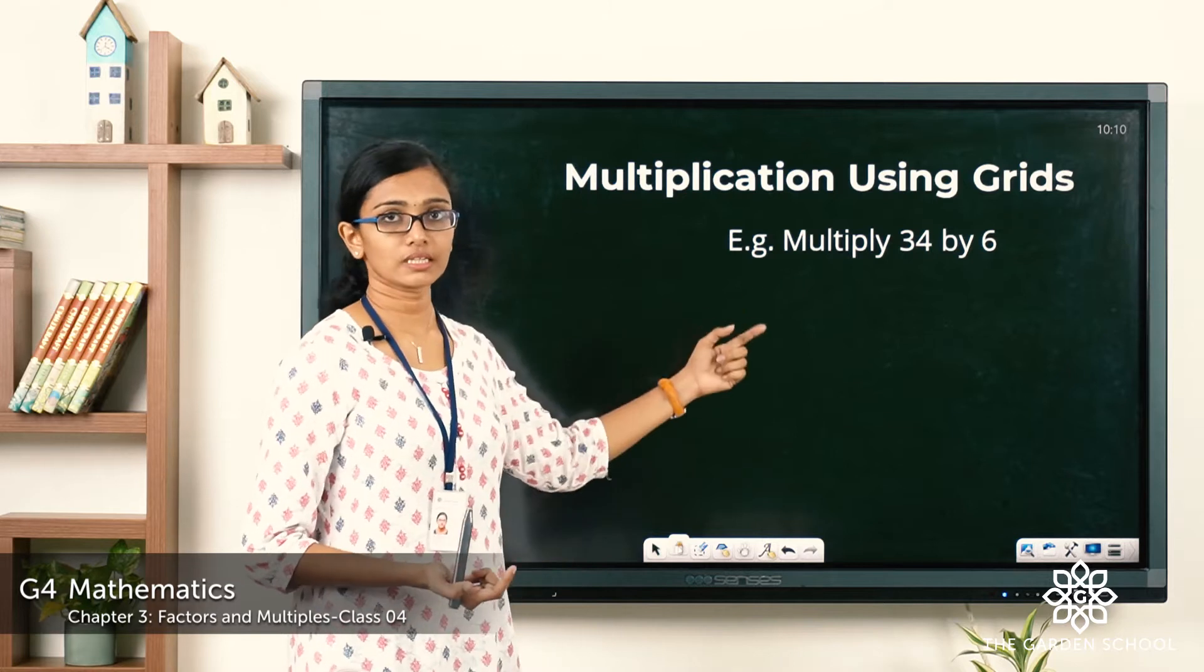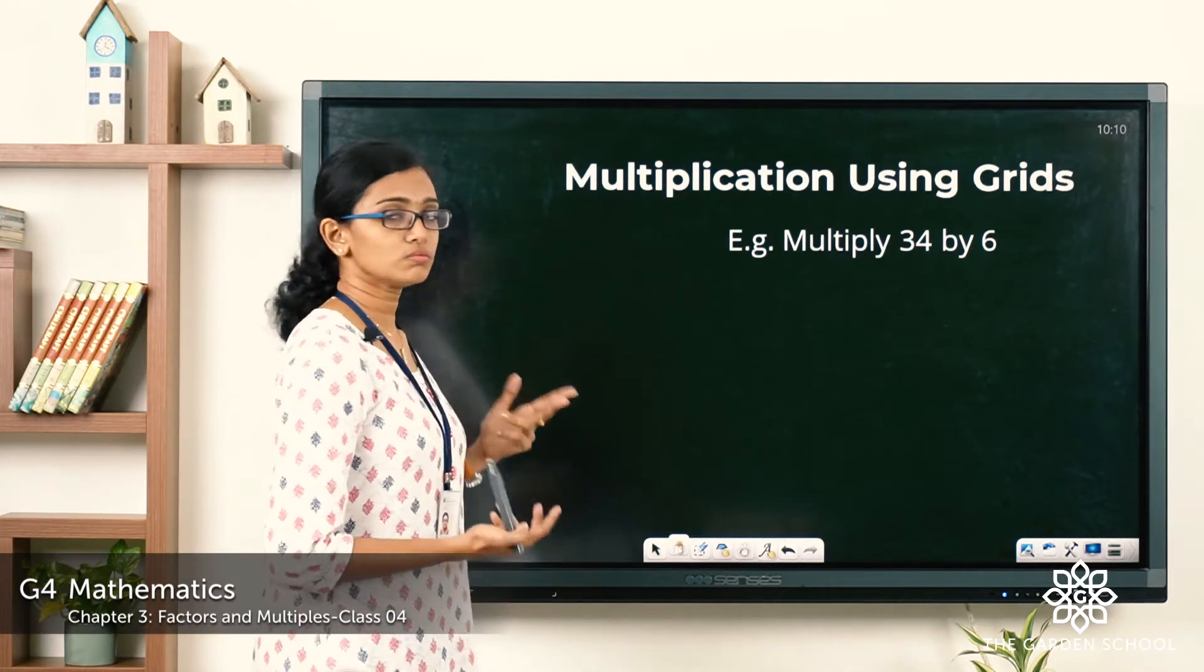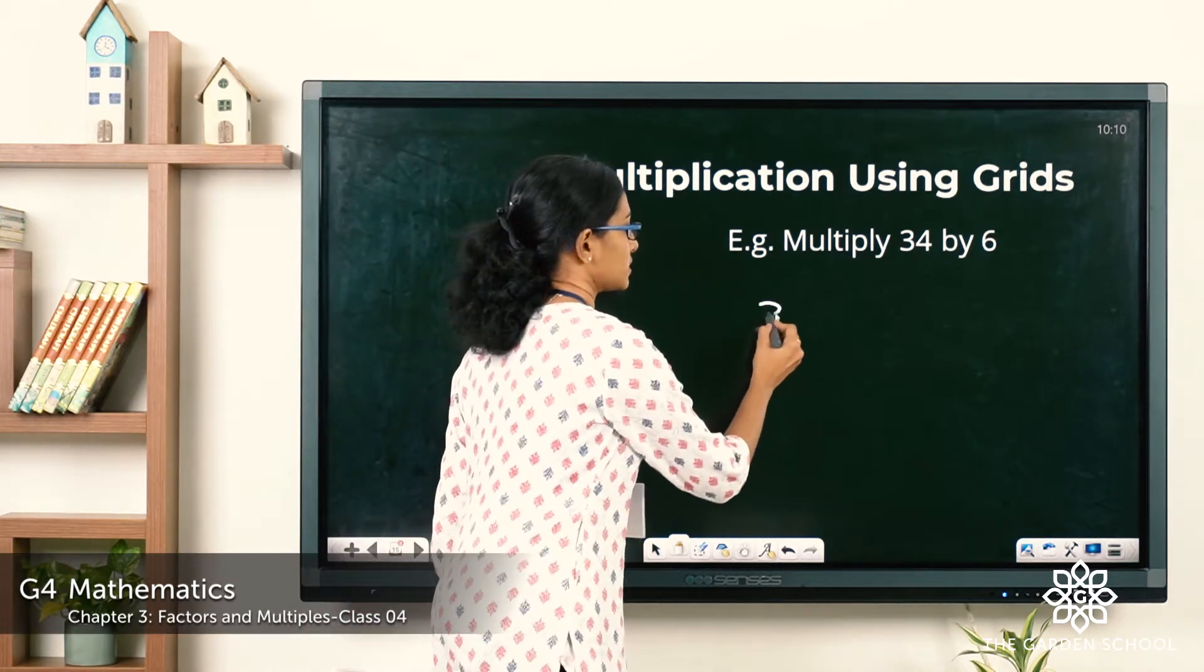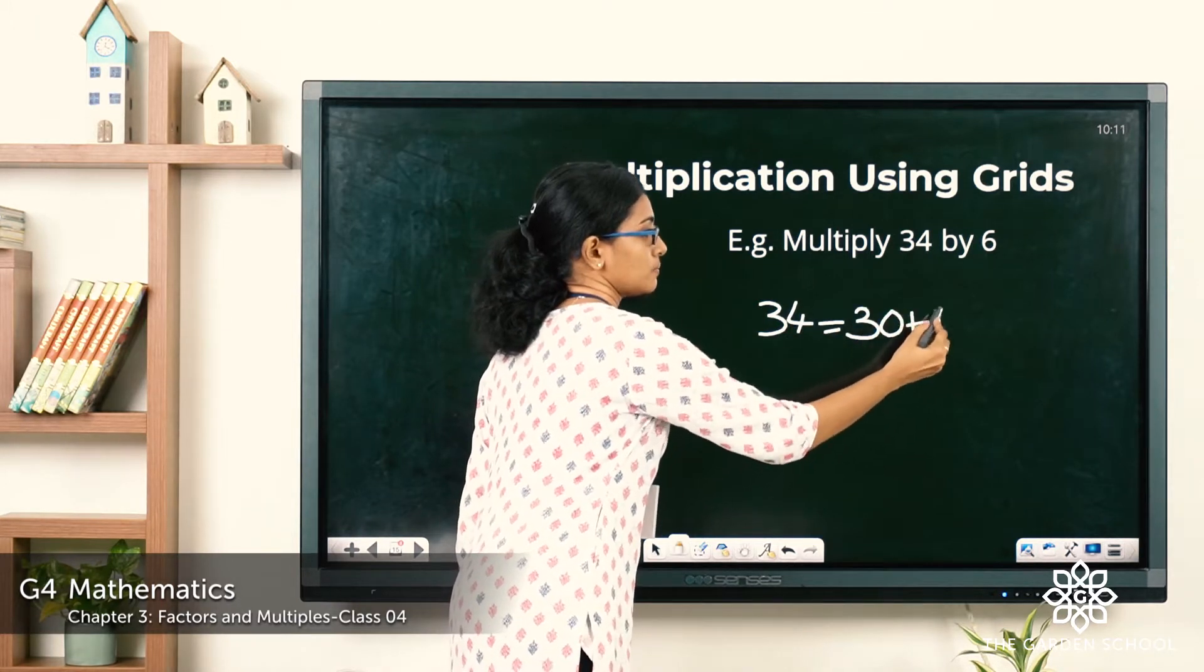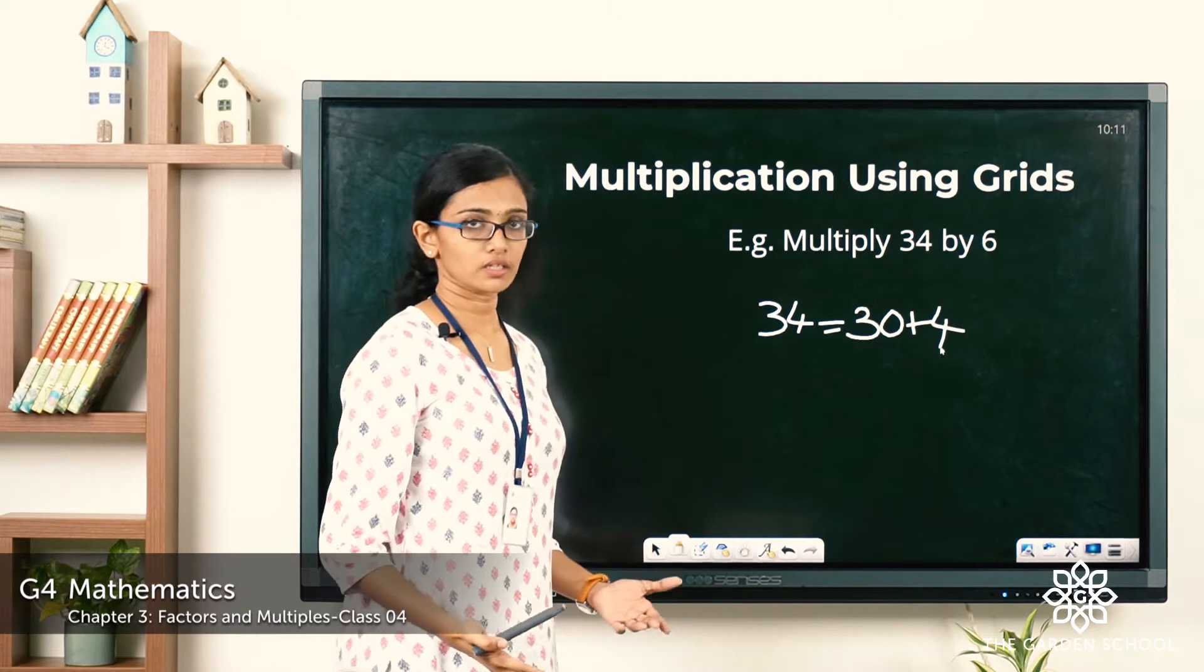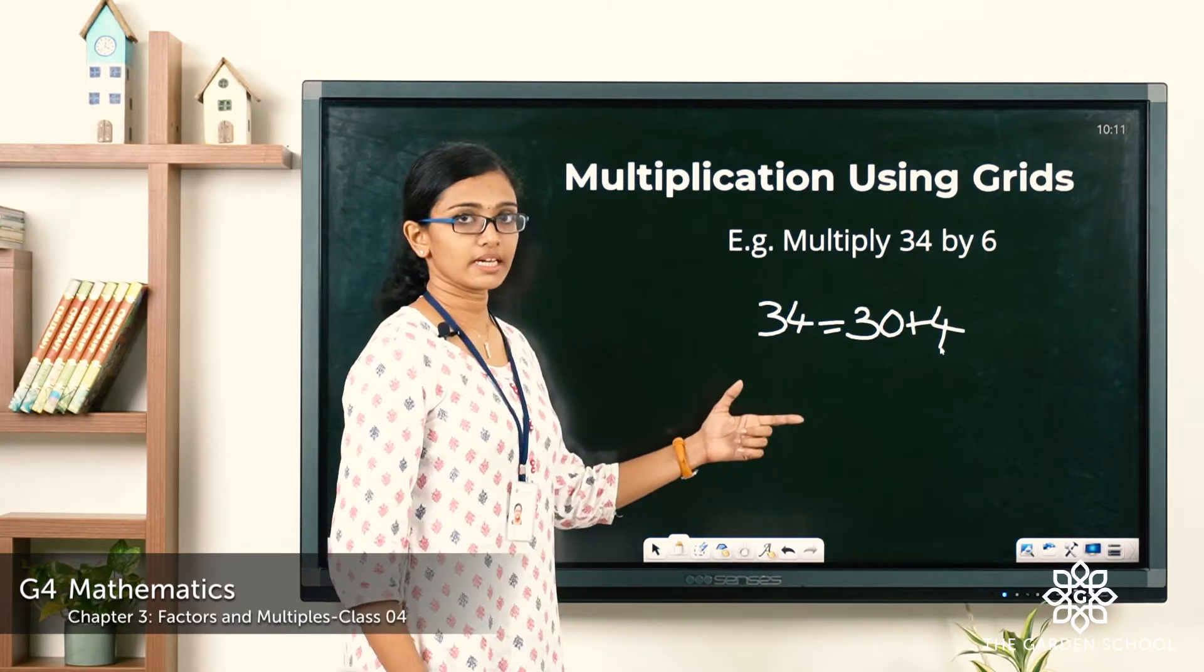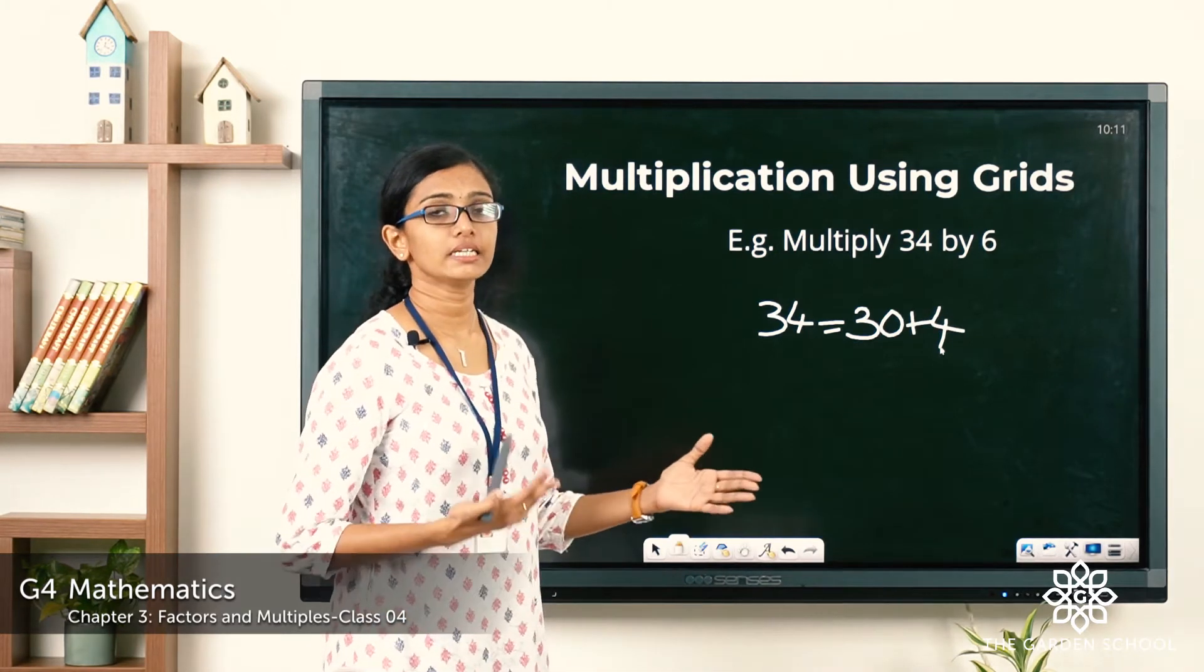So with that in mind, let's split this 34 into 2. So 34 can be split into 30 plus 4. So once you split that, we are going to make a grid.